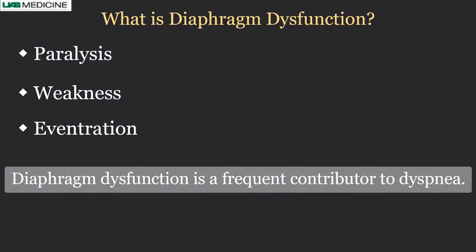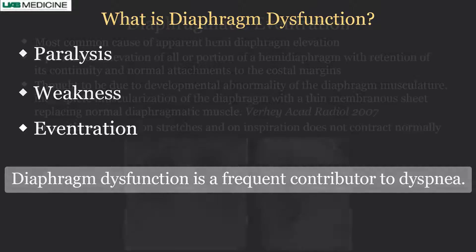Diaphragm dysfunction can be either total paralysis — no movement — or it can be weak, meaning it moves but not normally. Or it can be due to eventration, which is a congenital anomaly. Diaphragmatic dysfunction is a frequent contributor to shortness of breath or dyspnea, which is a common complication from many diseases of the chest.